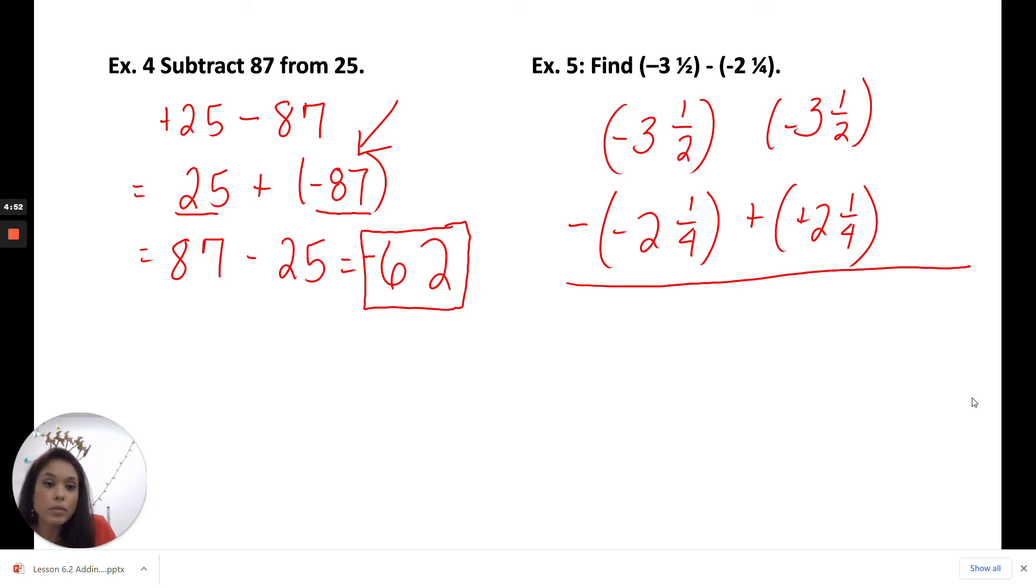We want to find the lowest common denominator, which will be 4. So now that I have my lowest common denominator, this will become negative 3 and 2 fourths. And my bottom number will be 2 and 1 fourth. Because the signs are different, I'm going to subtract my smaller number from my larger number using the absolute value. So 2 minus 1 is 1 fourth, and then 3 minus 2 is 1. And I keep the sign of my larger number. So the answer is negative 1 and 1 fourth.